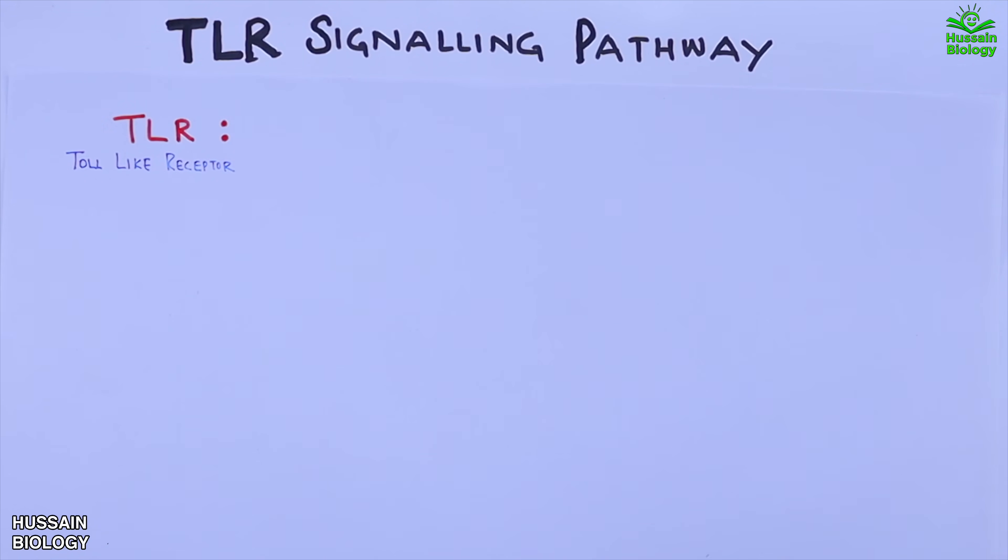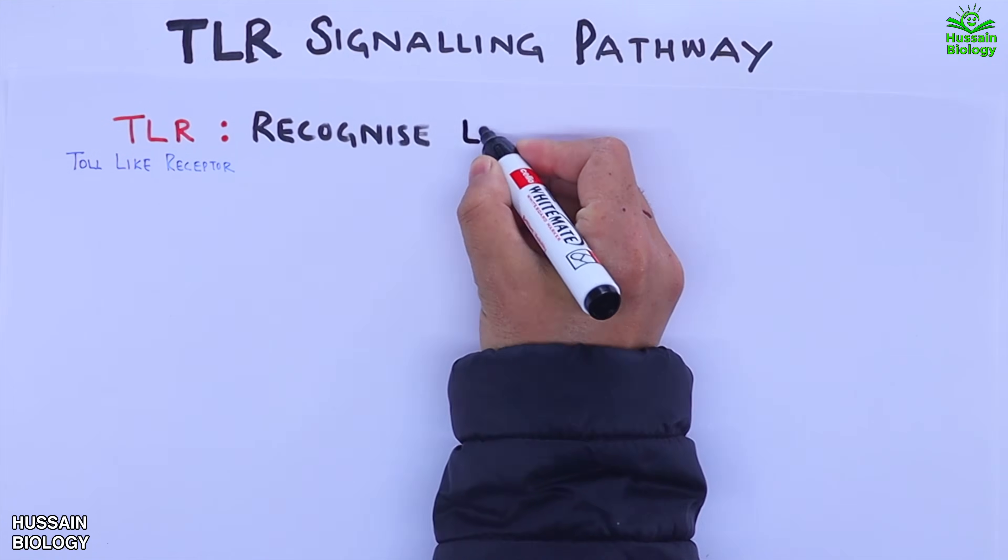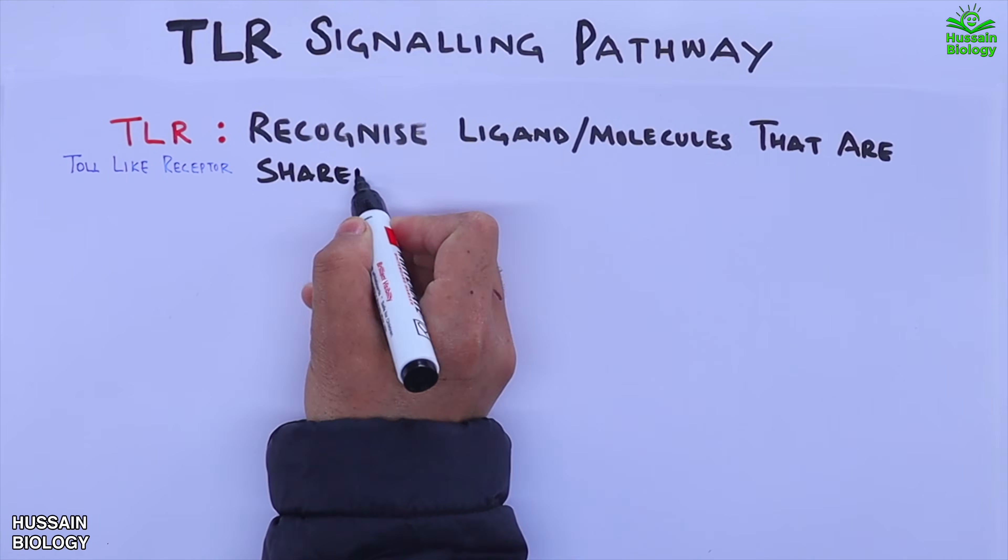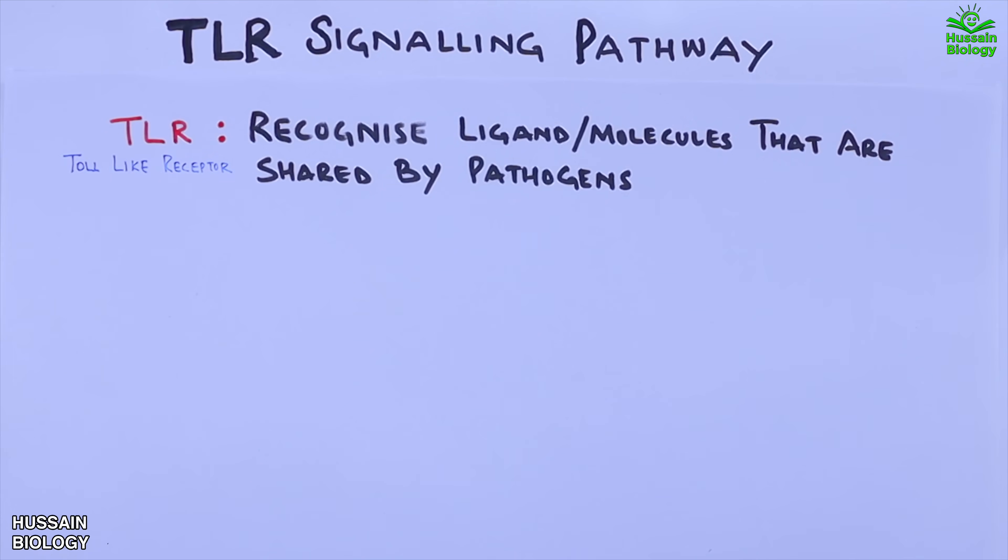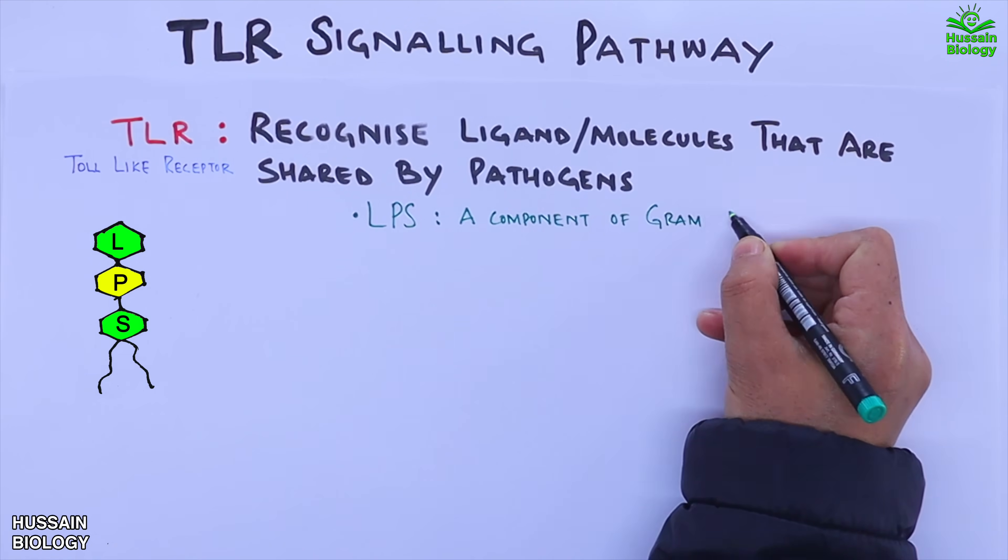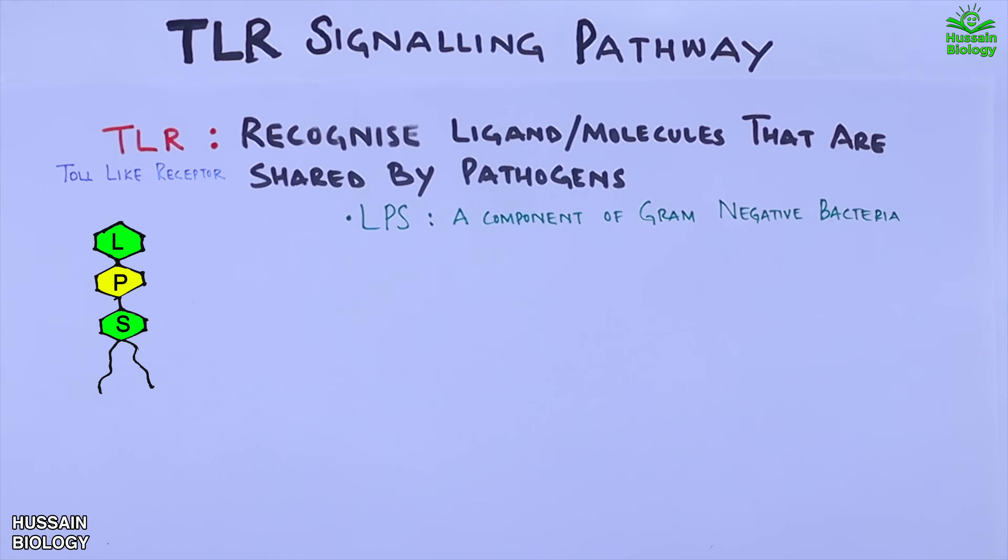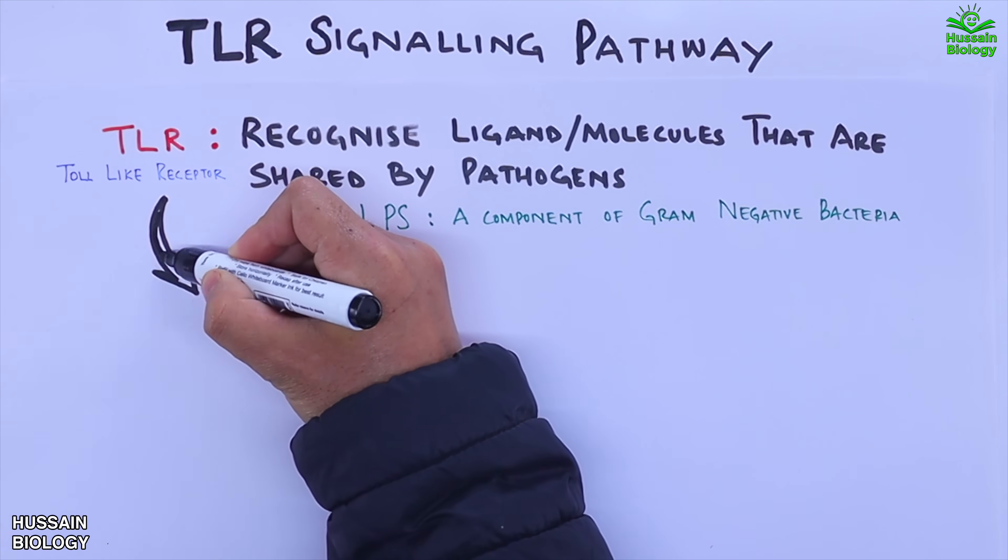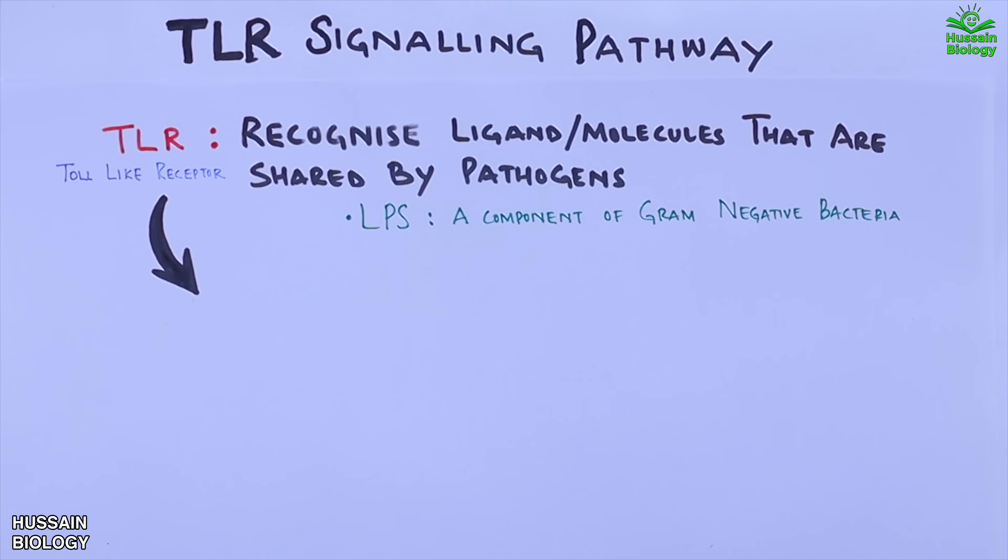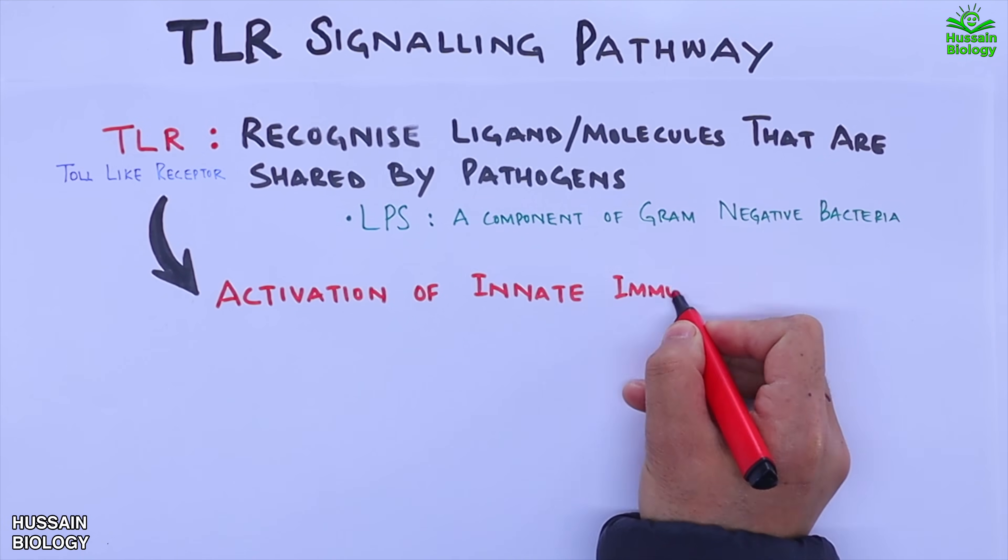This TLR or toll-like receptor proteins recognize ligands or molecules that are shared by pathogens. Like we have LPS molecules that is component of a cell membrane from gram-negative bacteria. So upon ligand binding with TLR the signaling pathway is driven that leads to activation of innate immune system.